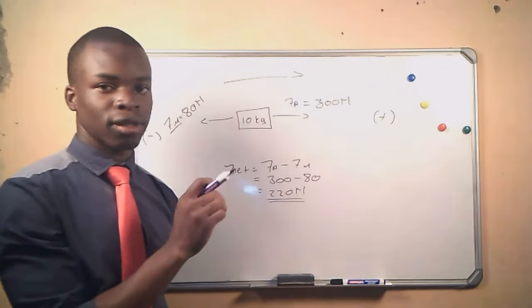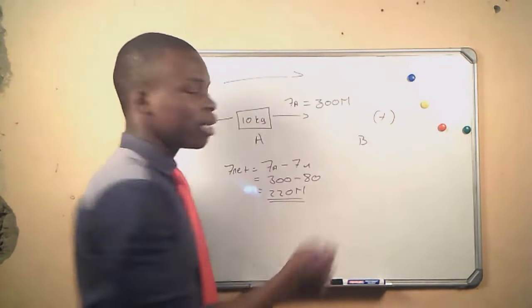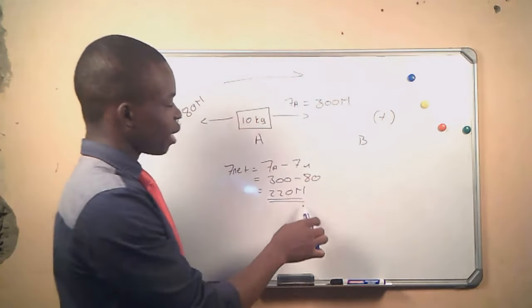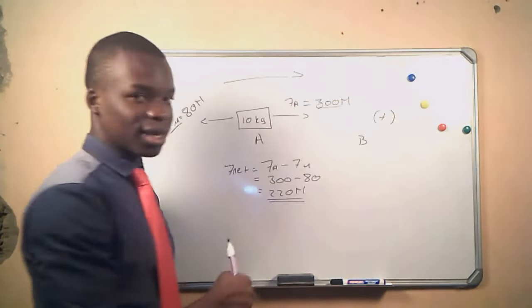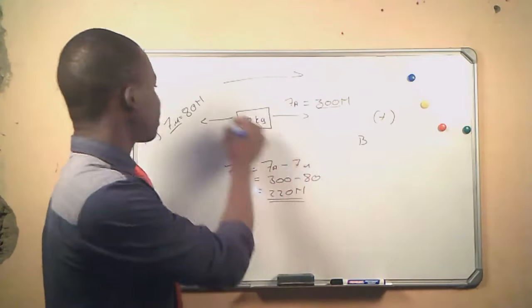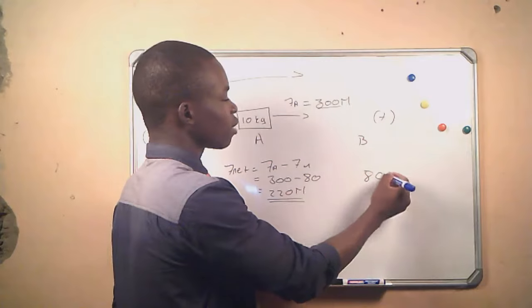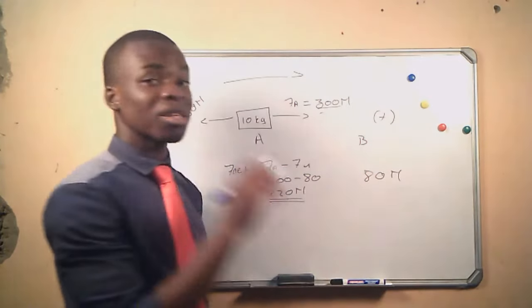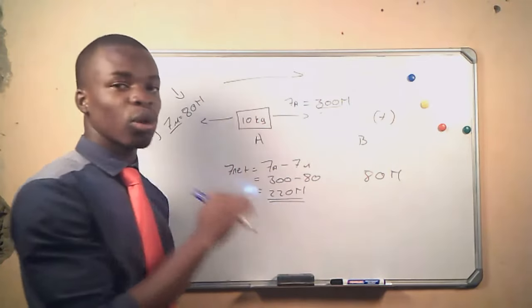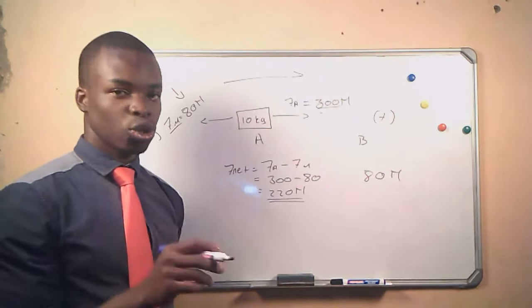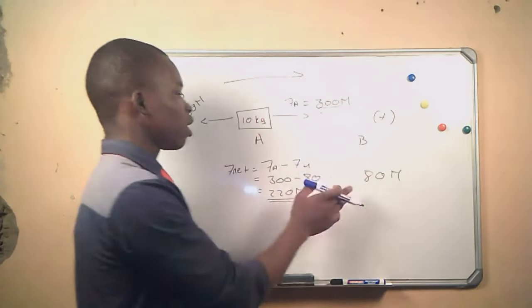This is the effective force that will get the box from point A to point B. The applied force was 300 newtons, but since we had a frictional force of 80 newtons, 80 newtons was used to cancel out with the frictional force. That is why we end up with a net force of 220 newtons — the effective force on the box.